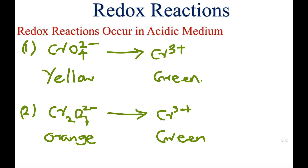The color of chromate ion is yellow and Cr³⁺ color is green. The second reaction is dichromate becoming Cr³⁺ in acidic medium. The color of dichromate is orange and Cr³⁺ takes green color.